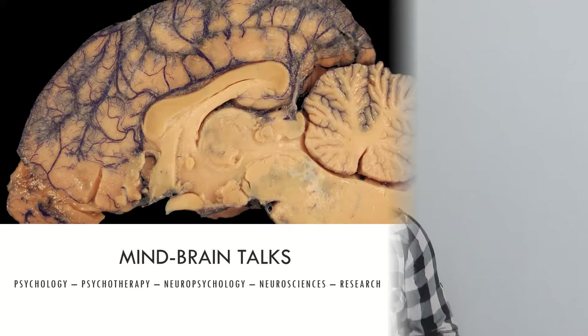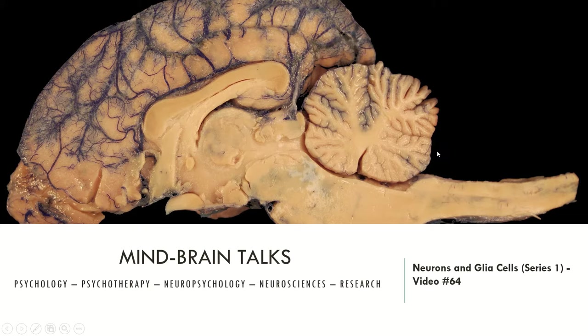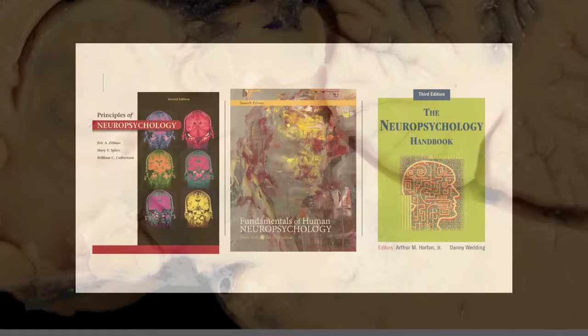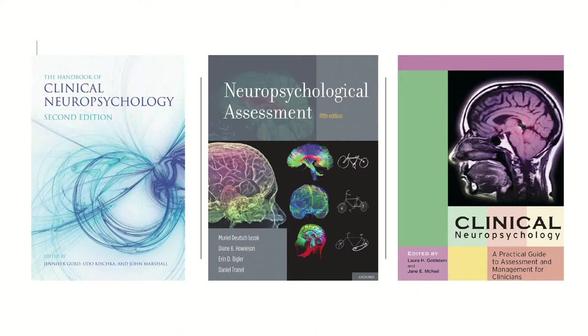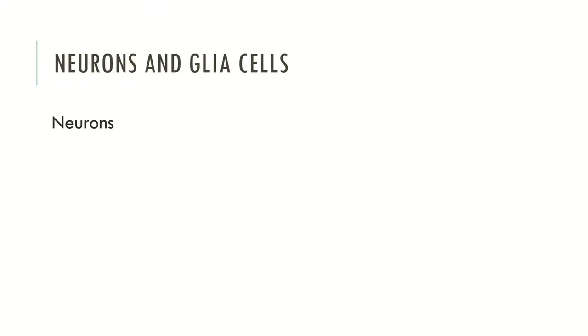Today's video is focused on neurons and glial cells. These types of cells are the ones that allow neurocognitive functions and mental processes to operate. But first, let's see the manuals I recommend: Principles of Neuropsychology, Fundamentals of Human Neuropsychology, the Neuropsychology Handbook, Clinical Neuropsychology second edition, Neuropsychological Assessment by Lezac, and Clinical Neuropsychology by Lara Goldstein and Jenny MacMill.